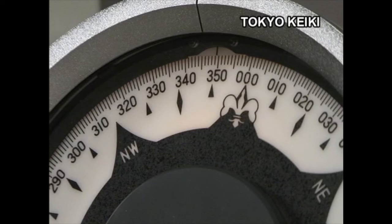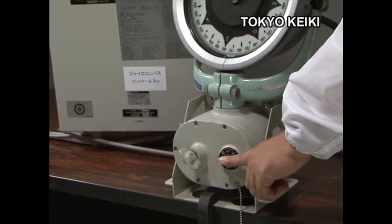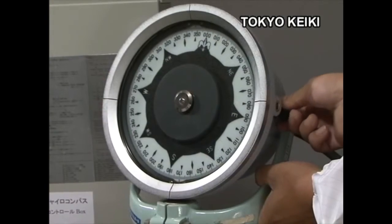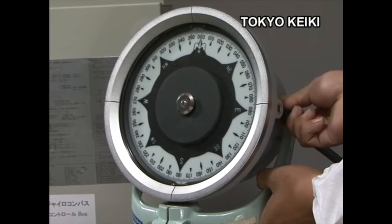If a discrepancy between the indication of the gyro compass and that of the repeater compass is discovered, adjust the repeater compass. Make adjustments using the knob on the side of the repeater compass.